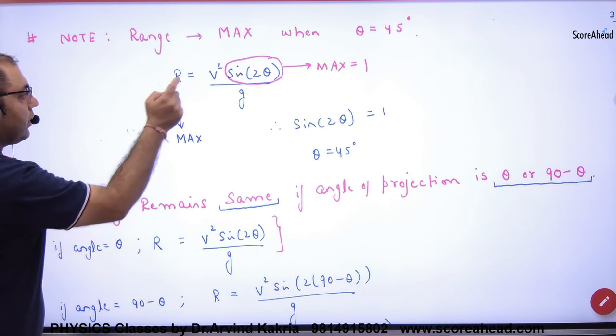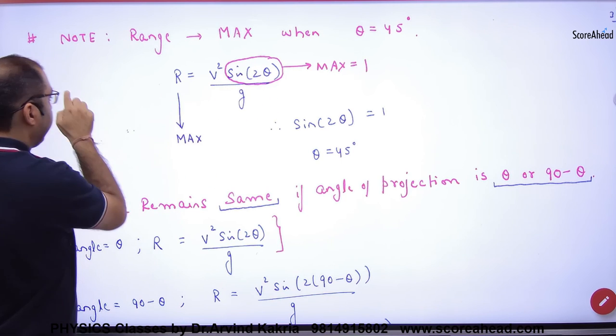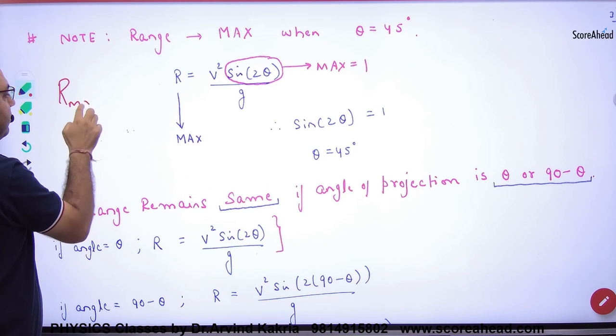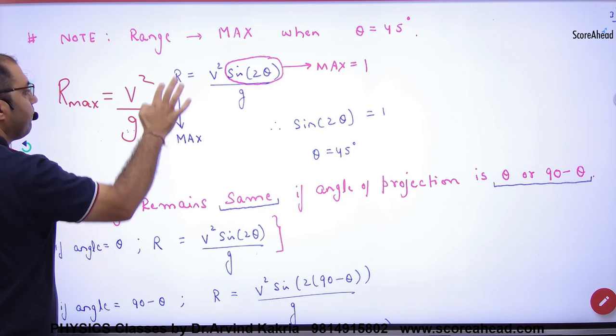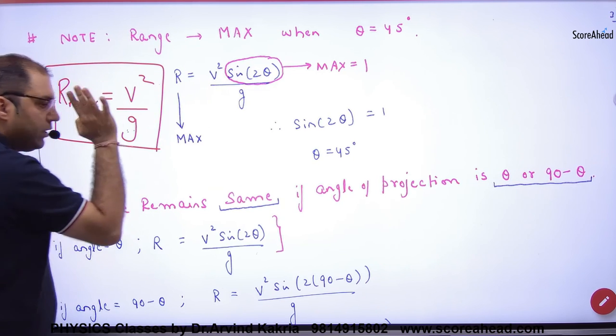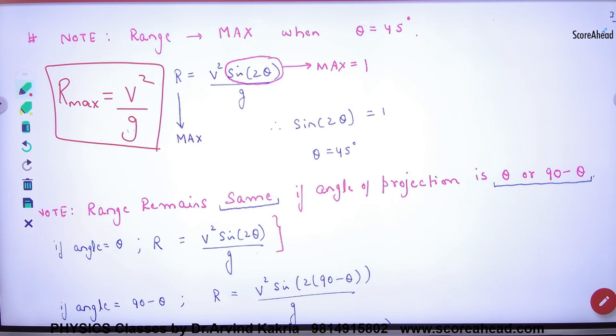also if the angle is 45 degrees, sin(2θ) is 1, then the maximum range formula comes out to be v² divided by g. This is the answer for maximum range.